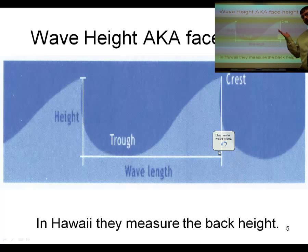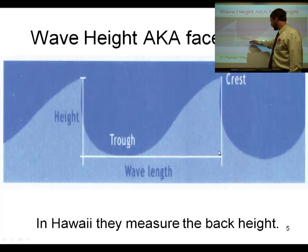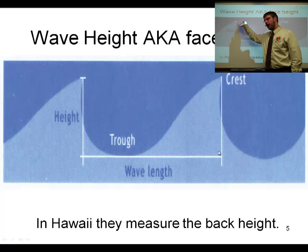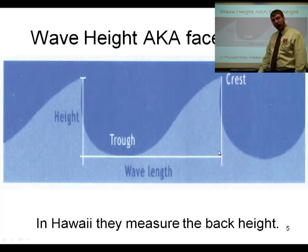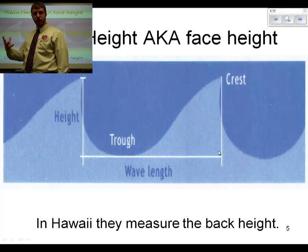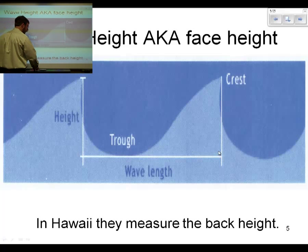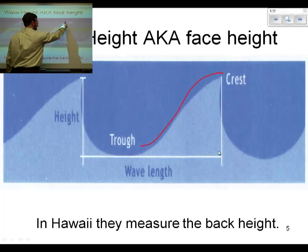Wave height is a measure of how tall the wave is — essentially a measure from the bottom of the trough to the top of the crest. That is called face height. In Hawaii, it's worth mentioning that they record their waves as artificially bigger because they record them by the back height, which would be this distance here.